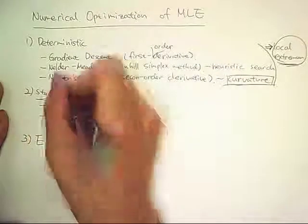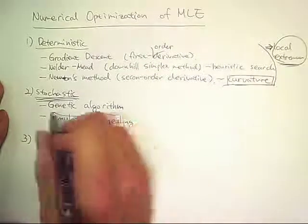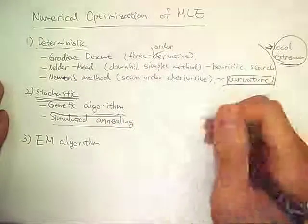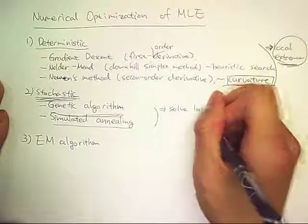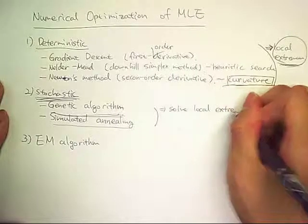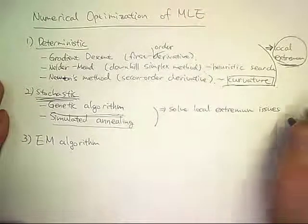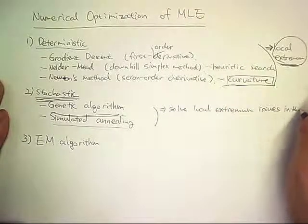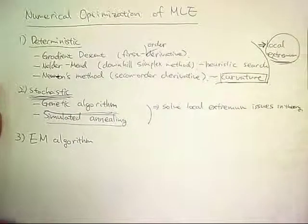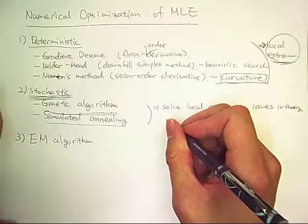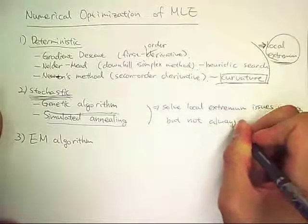Another category is stochastic algorithms. These include genetic algorithms and simulated annealing. These algorithms address the local extrema issues that deterministic algorithms have, though they are not always applicable.